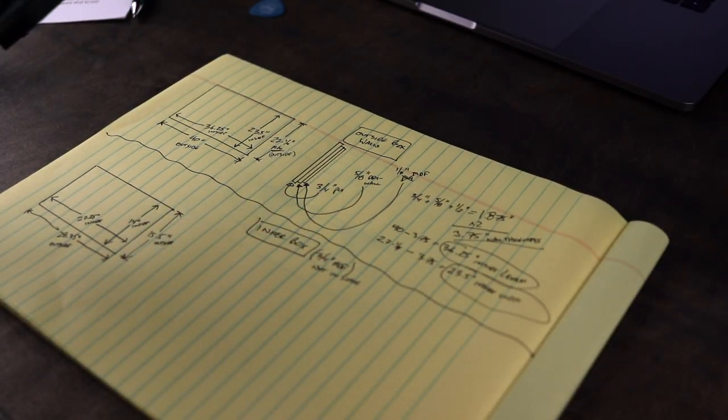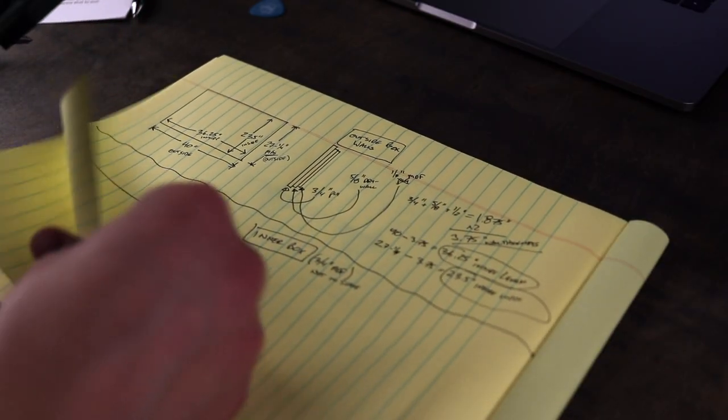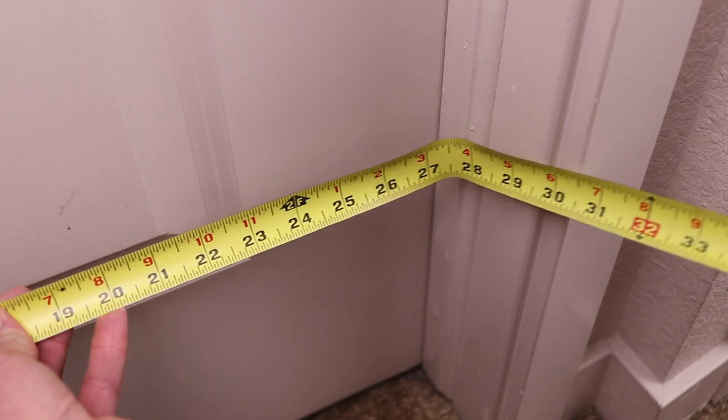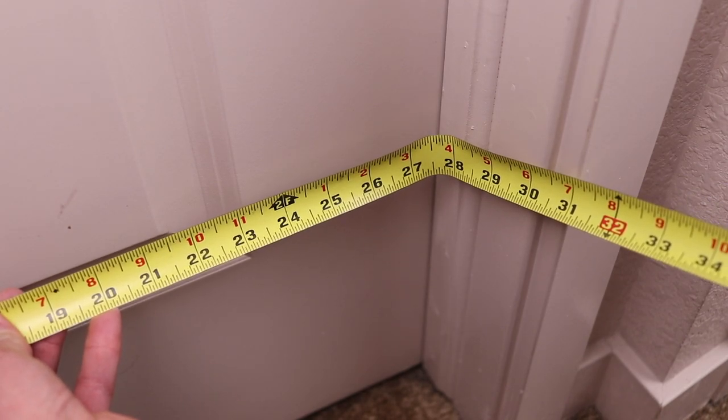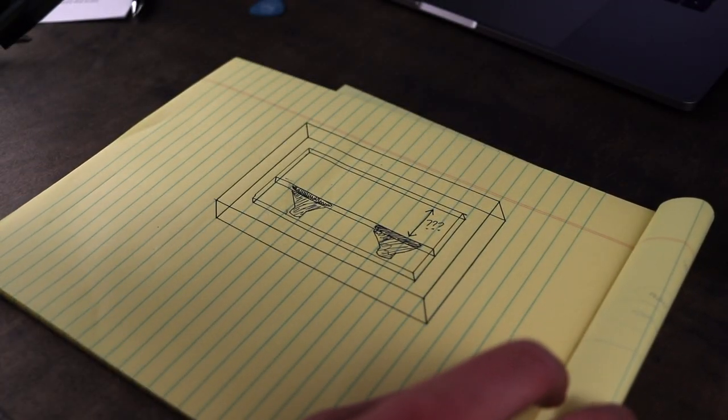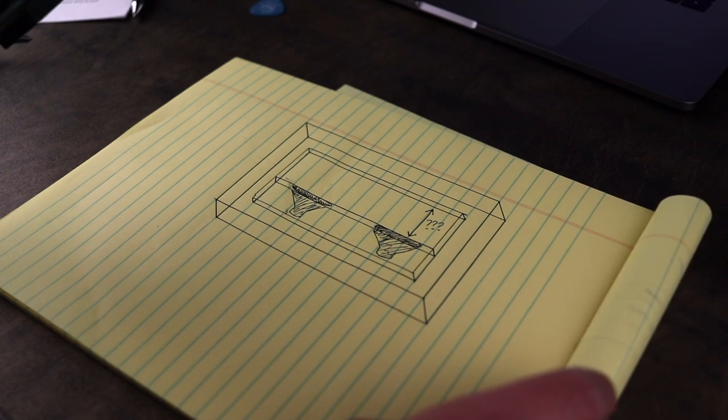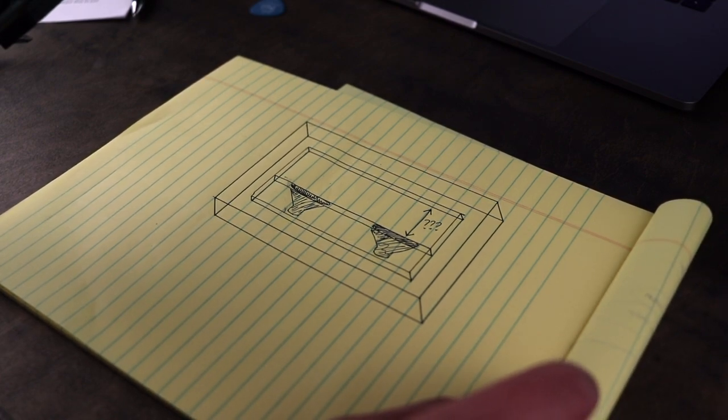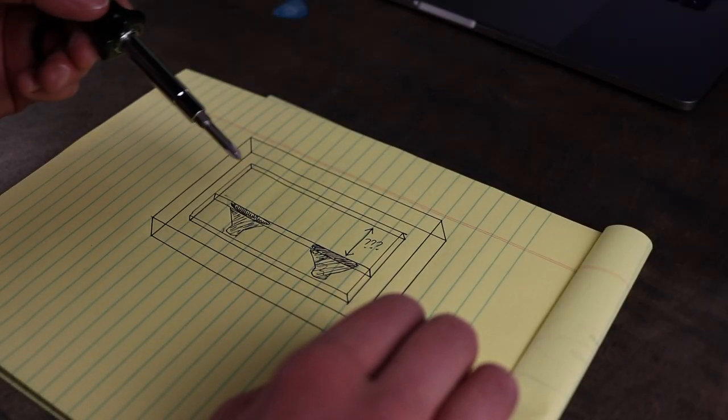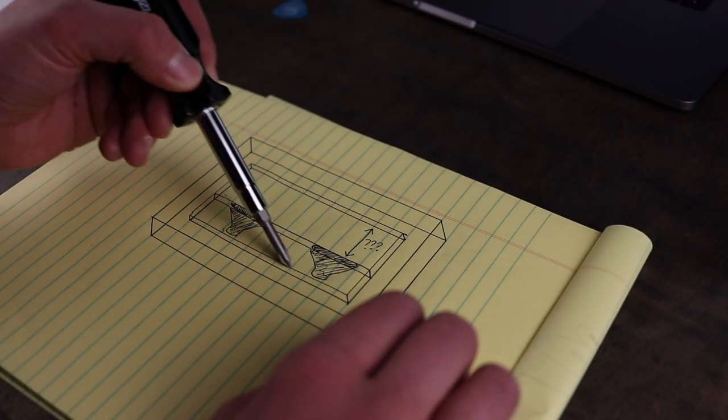A quick note about design constraints. I wanted this cabinet to be able to fit through household doors, so the maximum width is going to be 27 and a quarter inches. I decided to orient the speakers up so I can maximize the area around the mic without increasing the footprint.